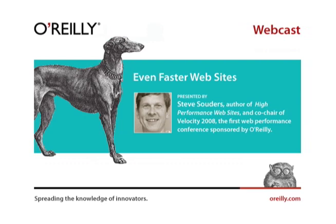Steve is also an engaging presenter, as you're about to find out in this webcast. Thousands have benefited from his book and his presentations on that subject. Tomorrow at the Web 2.0 Expo in San Francisco, Steve will make a presentation from 1:30 to 2:20 p.m. Steve is also the co-chair of Velocity — a new O'Reilly conference dedicated to web performance and operations, on June 23rd to 24th, 2008, in Burlingame, California. The theme is Fast, Scalable, Resilient, Available. Speed and scalability are the promise behind the rules in Steve's book and presentation.